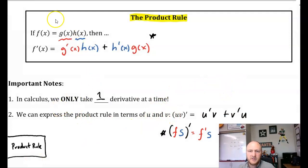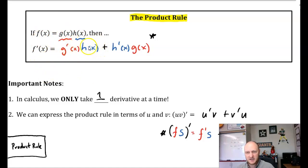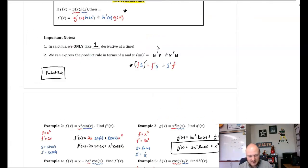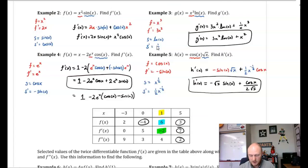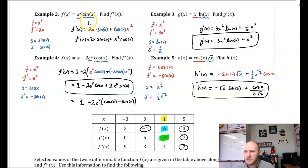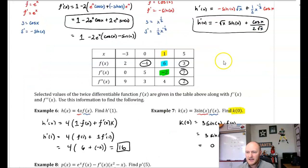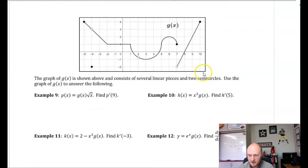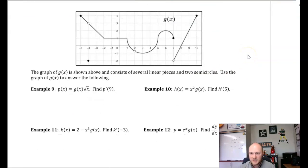So the product rule: if a function is g of x times h of x, then the derivative of that function would be the derivative of the first function, g prime, times the second, h, plus the derivative of the second function, h prime, times the first, g. In the first video, we talked about derivatives of analytic functions as well as tabular functions — a table of values. And now we're going to look at the third form, which is graphs.